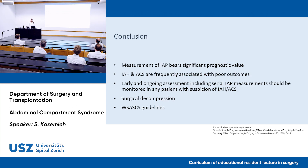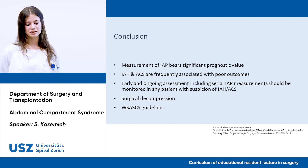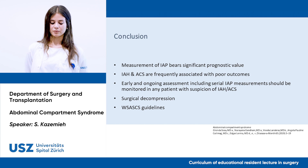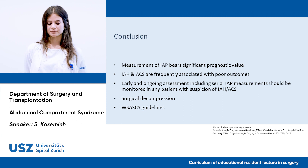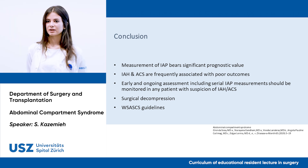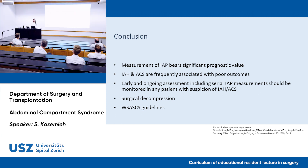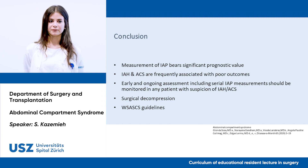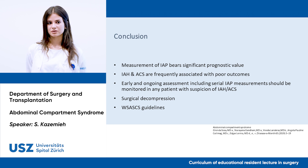To recap: measurement of IAP has significant prognostic value; IAH and ACS are frequently associated with poor outcomes. Early and ongoing assessment, including serial IAP measurements, should be monitored in any patient with suspicion of IAH or ACS, and one should pursue early surgical decompression rather than delayed. The guidelines of the World Society of Abdominal Compartment Syndrome serve as a guide, but clinical evaluation is also important — sometimes you must make individual decisions, for example going for surgical decompression before formal trans-bladder measurement.